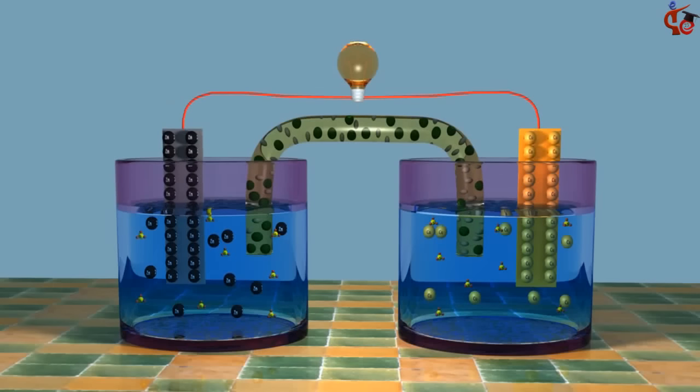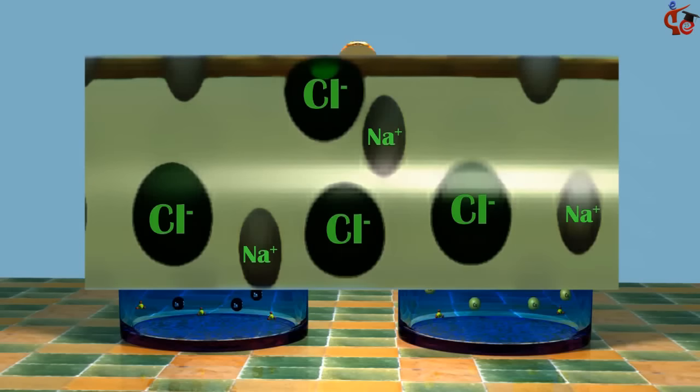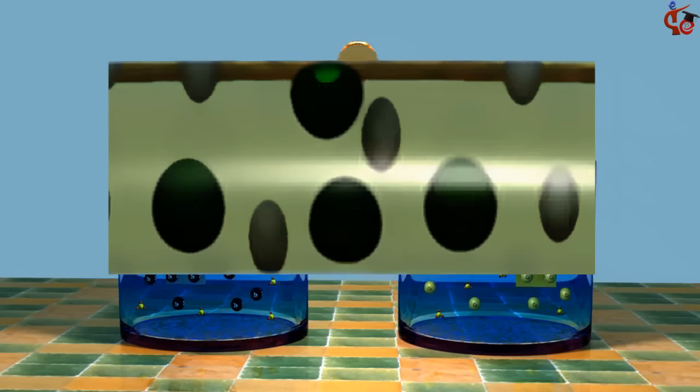The two solutions are connected by a porous sodium chloride salt bridge that prevents the two solutions from mixing but allows ions to migrate.